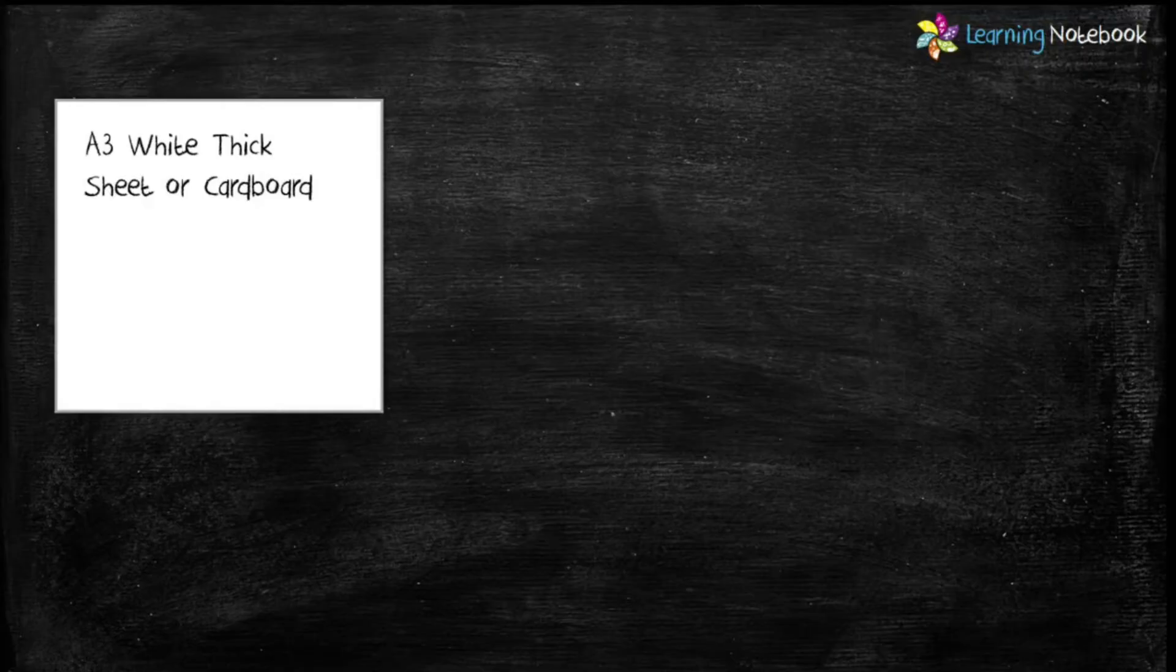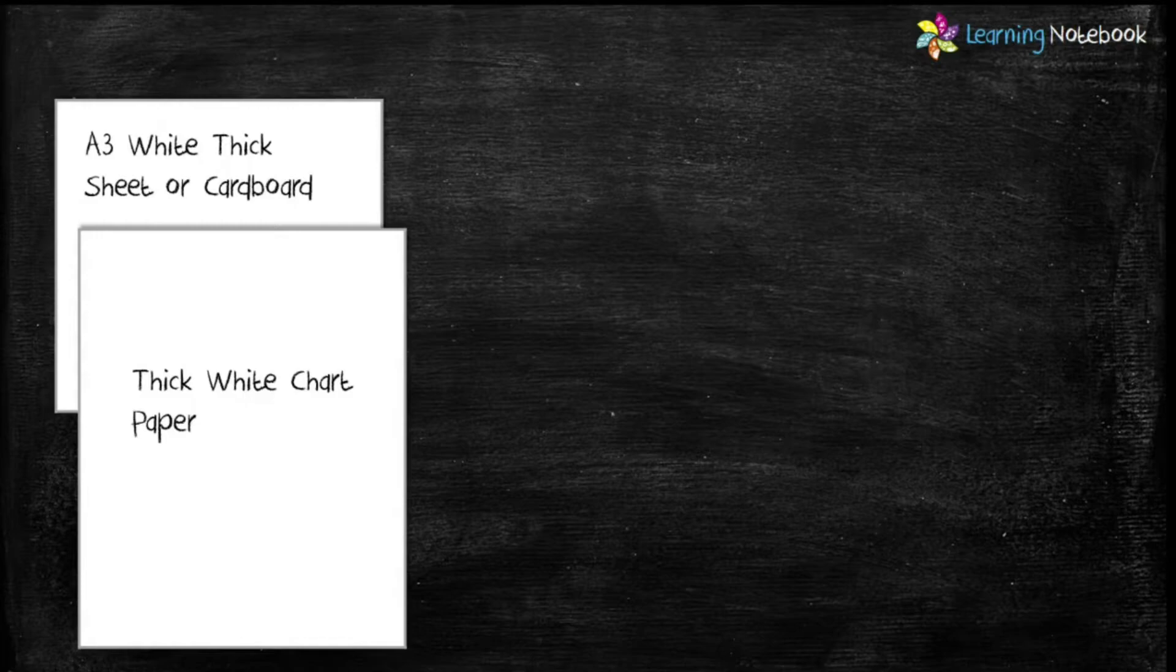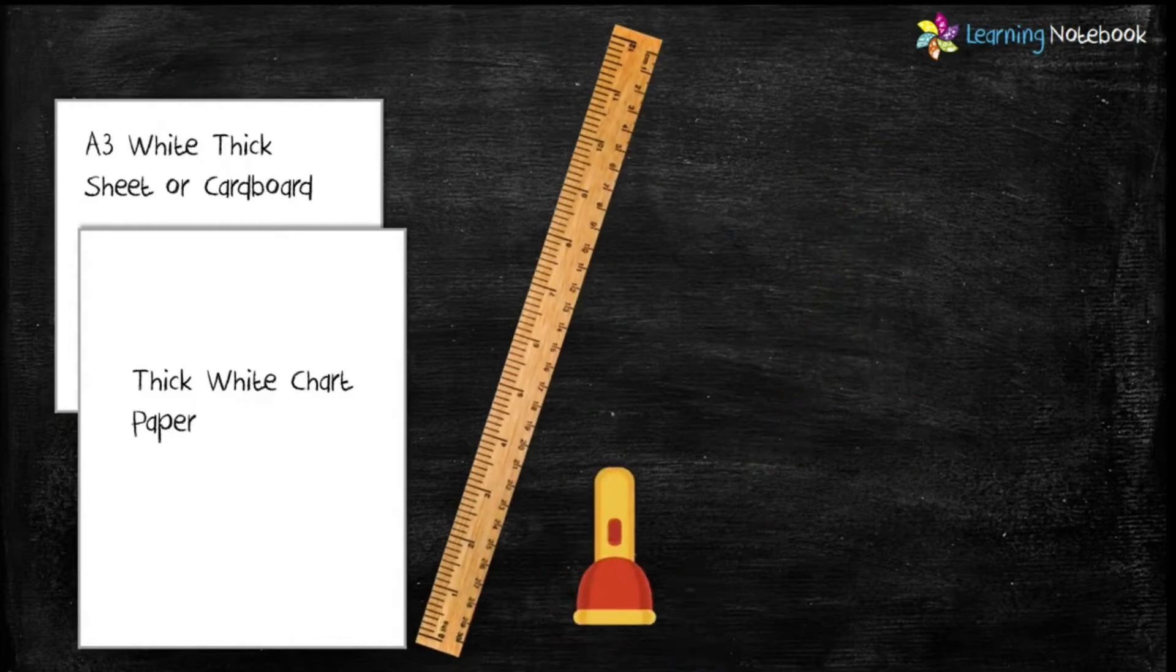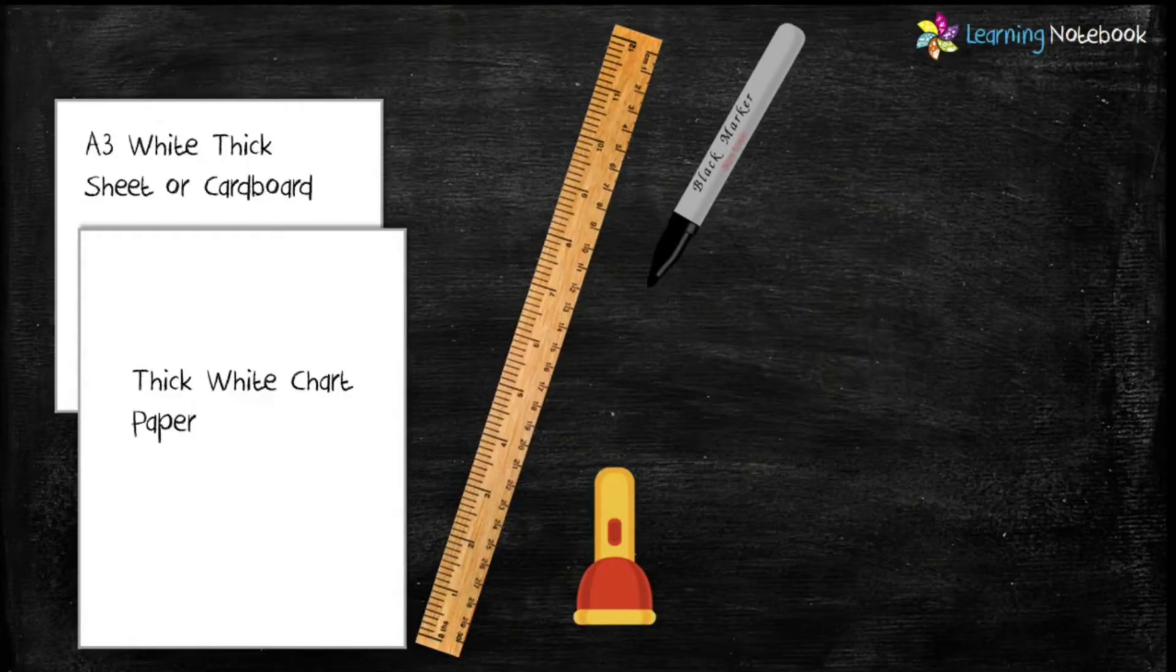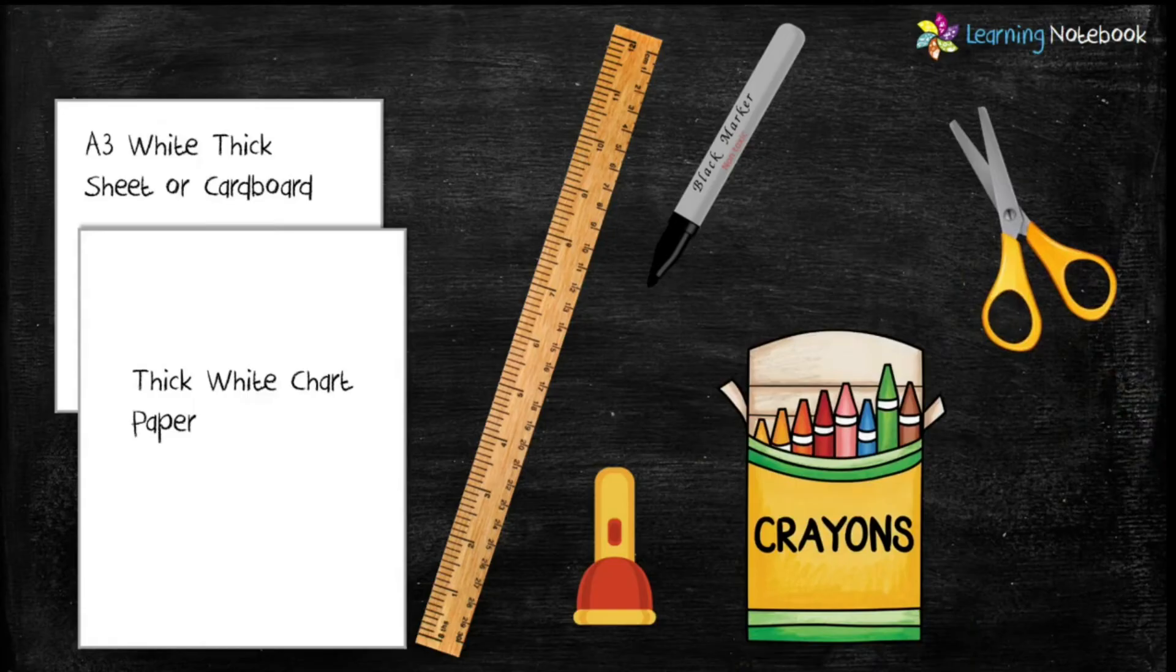For this activity we need one A3 white thick sheet or cardboard, one thick white chart paper, a ruler, a torch or a bulb, a black marker, few crayons and a pair of scissors.